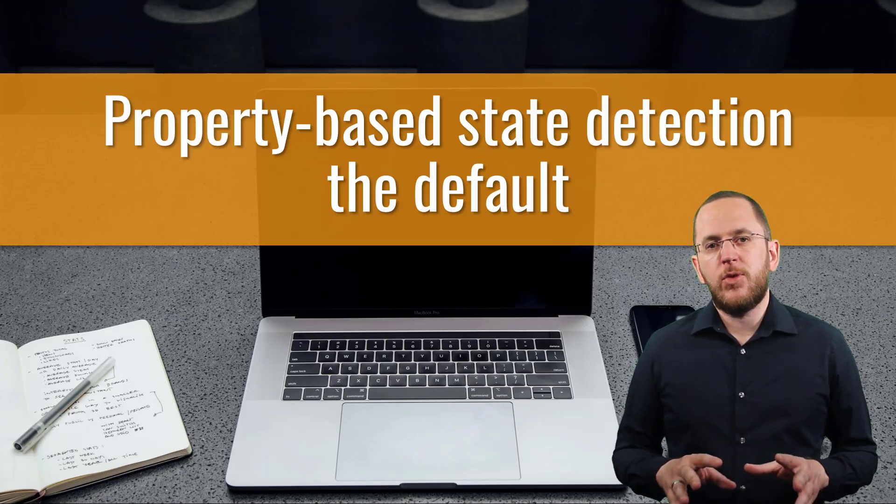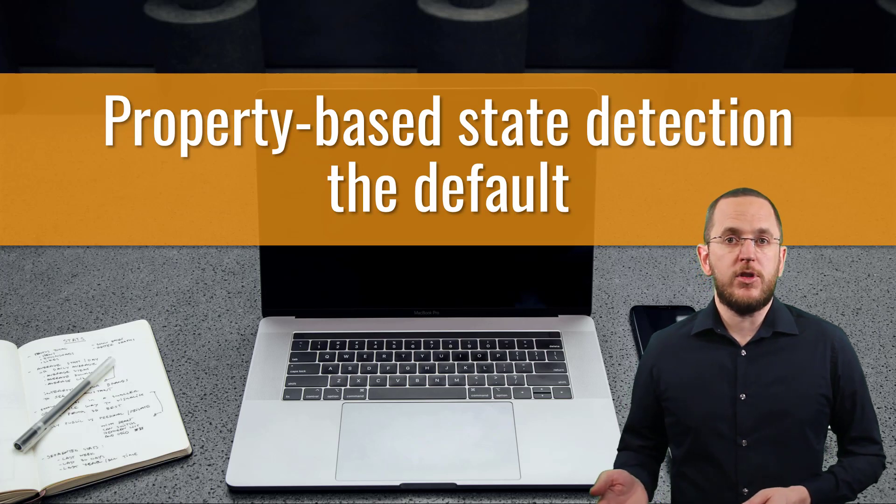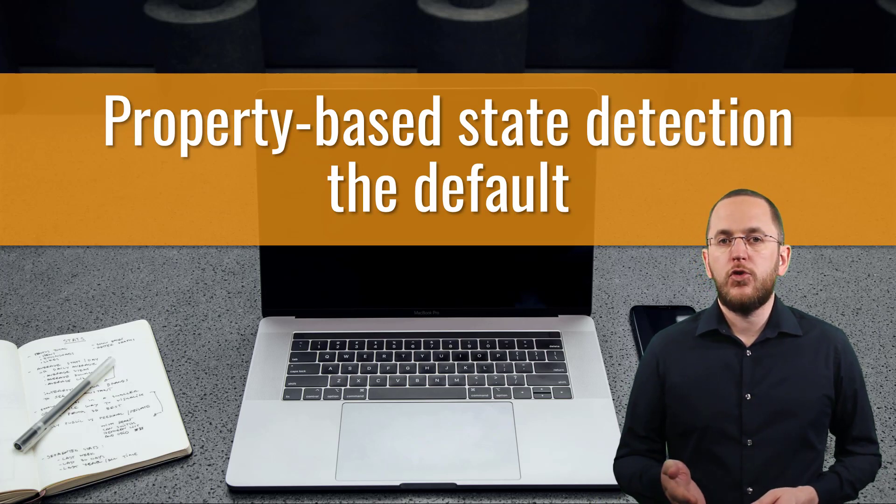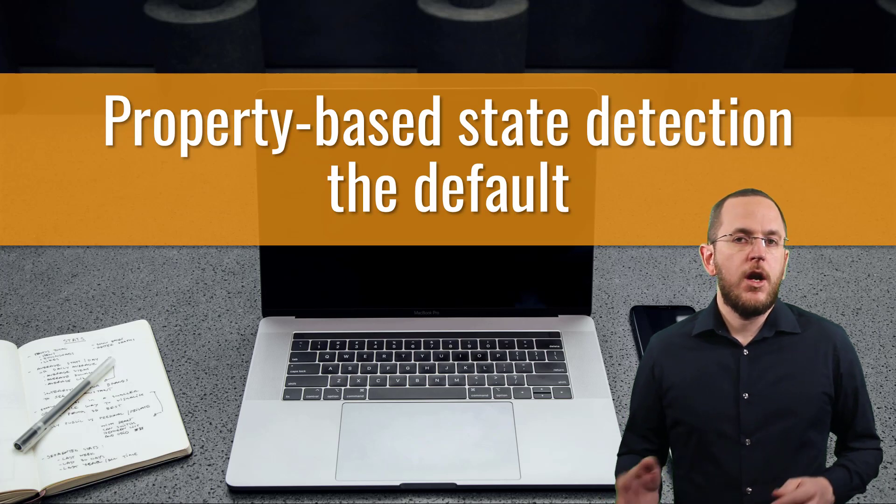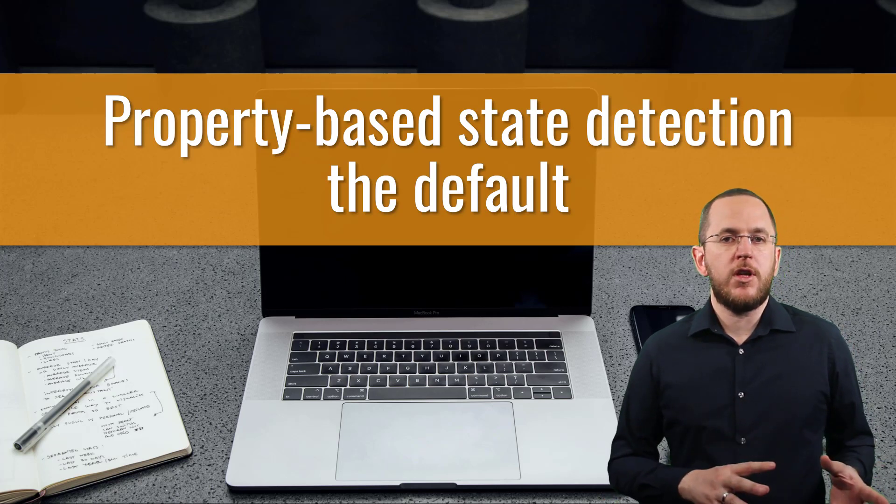The default state detection strategy relies on your entity's properties. If it includes a version property, Spring Data JPA uses it to detect the state. Otherwise, it uses the primary key attribute.